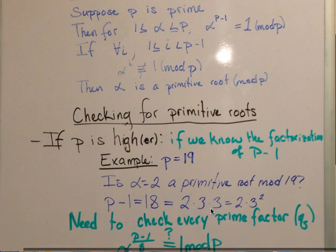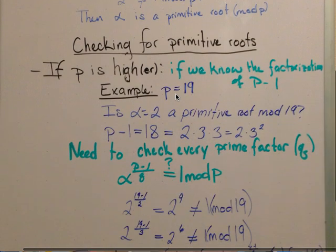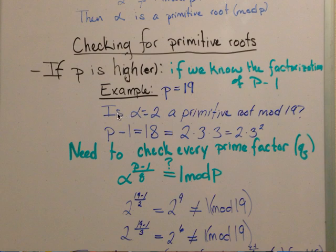For example, if p is 19, the question is: is alpha equals 2 a primitive root mod 19? First we find p minus 1 is 18 and factor it. We know that 18 equals 2 times 3 times 3, or 2 times 3 squared.